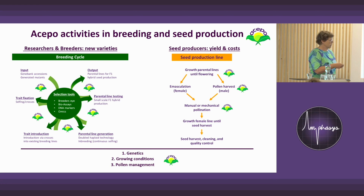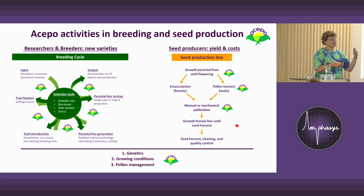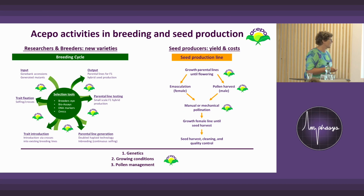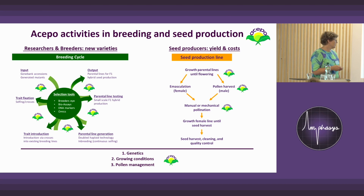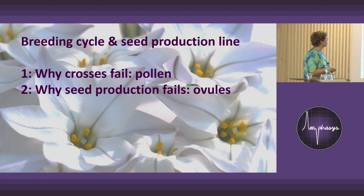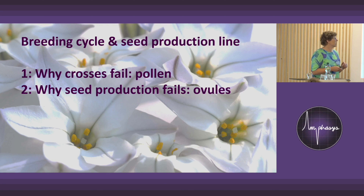Seed production is all about costs, so it should be as cost efficient as possible. Not enough seeds and rising seed production costs are underlying factors driven by genetics, growing conditions, and point management. I have two parts in my talk: why crosses fail on the pollen side, and the other on the ovule part.